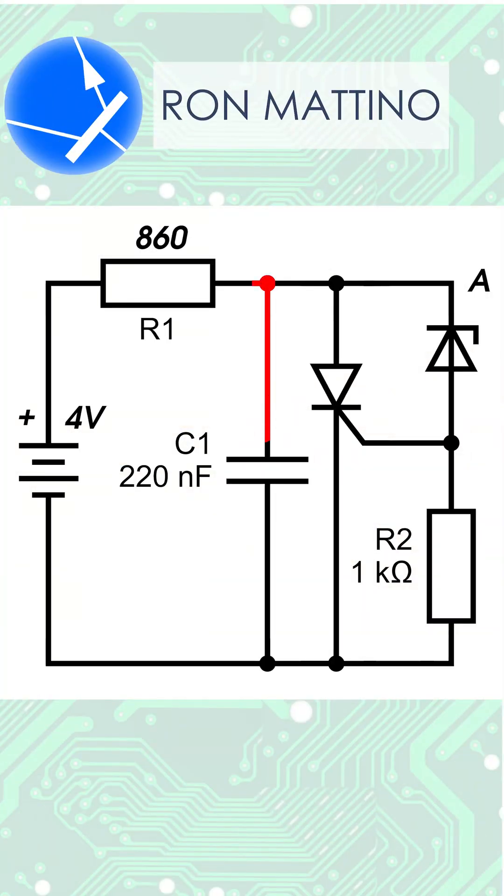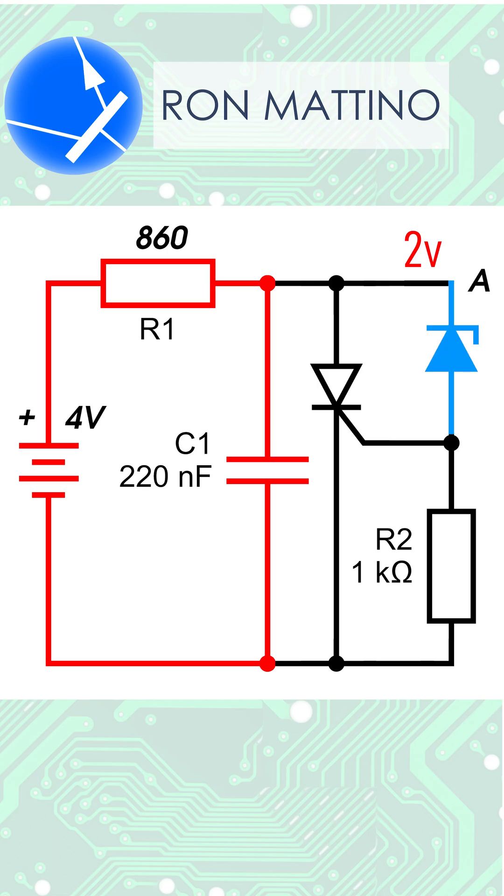So at power on, the C1 capacitor starts to charge via R1 resistor. Once the voltage at node A reaches 2V, which is our Zener diode voltage rating, the Zener turns on and starts feeding positive voltage to thyristor's gate. This makes the SCR turn on and latch, thanks to anode current provided by C1.